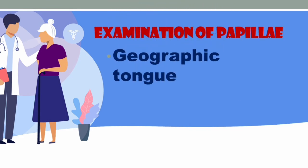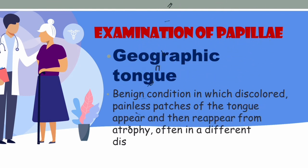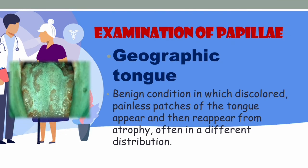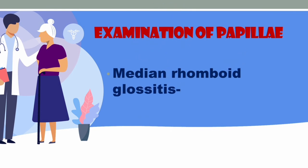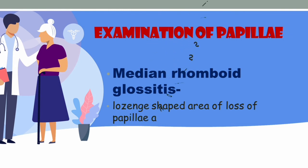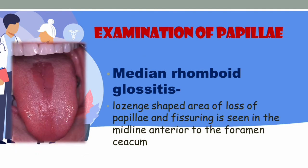Geographical tongue is a very interesting finding — it is purely benign, found in 1 to 3 percent of the world population. It presents as painless patches that appear and reappear due to atrophy with no strongly associated disease conditions; sometimes it is purely physiological. Another interesting pattern is median rhomboid glossitis, which shows a diamond or lozenge-shaped area of papillae loss in the midline, anterior to the foramen cecum — the border between the anterior and posterior tongue.